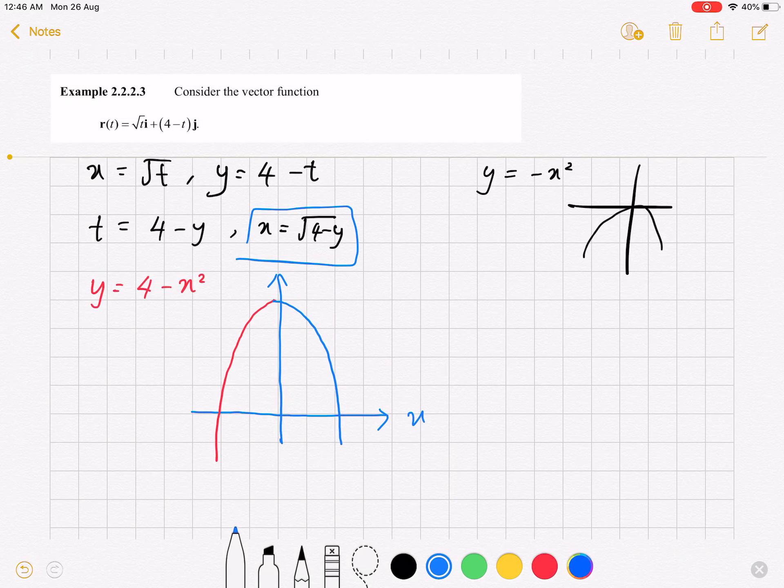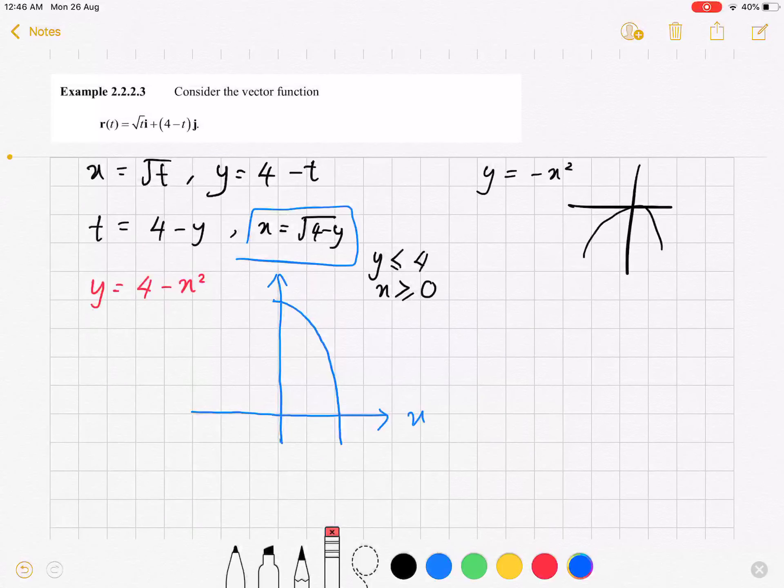But you have to be very careful. The complete quadratic curve actually represents the red equation, y equals to 4 minus x squared. But the equation here is x equals to square root 4 minus y. If you check, the y must be less than or equal to 4, and the x must be greater than or equal to 0. So actually, we will not have this curve. We just have this curve.